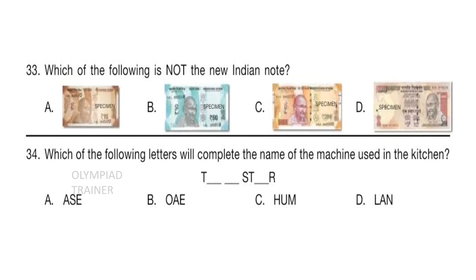Question 33: Which of the following is not a new Indian note? Answer is option D. A is the new 10 rupee note, B is the new 50 rupee note, C is the new 200 rupee note, but option D is an old note. Question 34: Which of the following letters will complete the name of the machine used in the kitchen? T _ _ ST _ R. Answer is option B — O, A, E — making the word TOASTER.